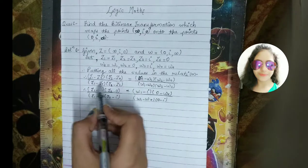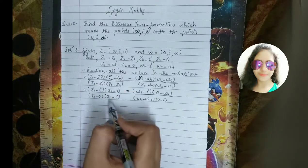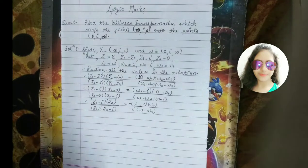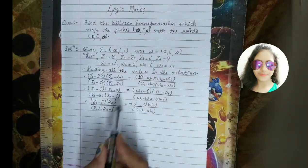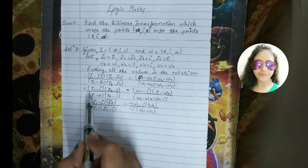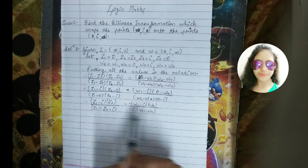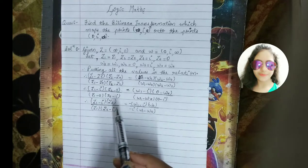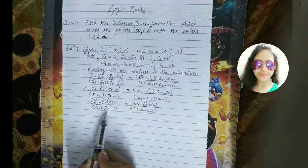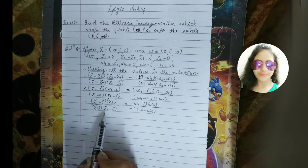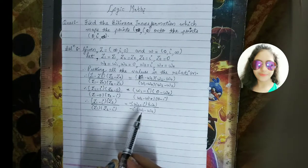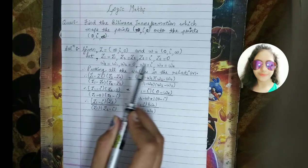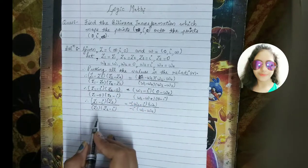This is my bilinear transform relation, and I have added all these values to it. Now we will solve them. I have done the next step — z2 minus 0 is z2 — and solved both sides.